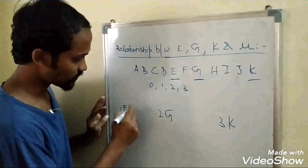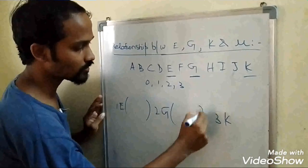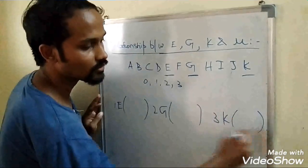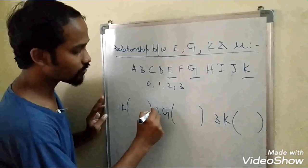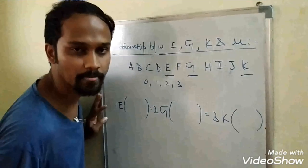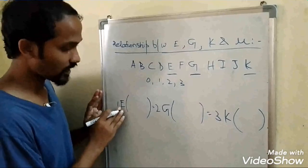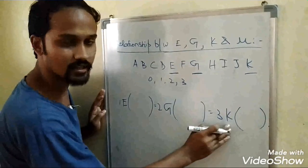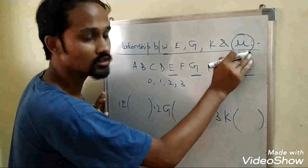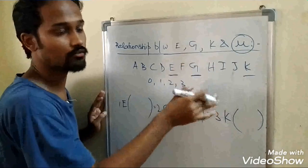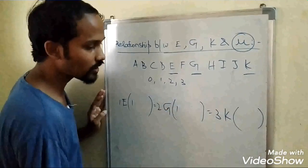Next, just put brackets here, here, and here. Then put an equals-to sign here and here. You must have noticed I have used E, G, and K but have not used Mu yet. Now I am going to use Mu. But before that, place 1 here, 1 here, and 1 here inside the brackets.